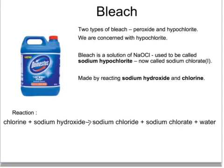Two of the products of the electrolysis of concentrated brine are used to make bleach. There are two types of bleach: peroxide bleach, which is used for dyeing hair, for example, and hypochlorite, or what's now called chlorate bleach. When chlorine is dissolved in sodium hydroxide, we get chlorate bleach being made. You need to know this chemical reaction in both words and symbols.